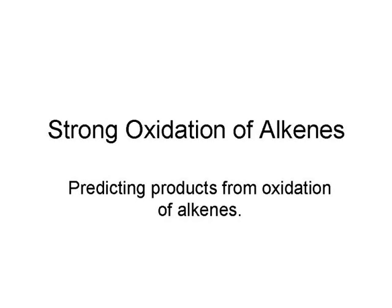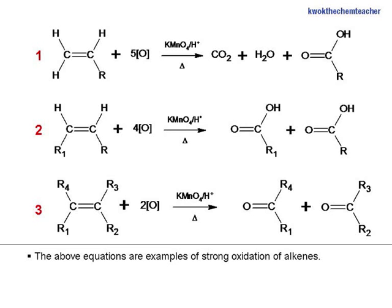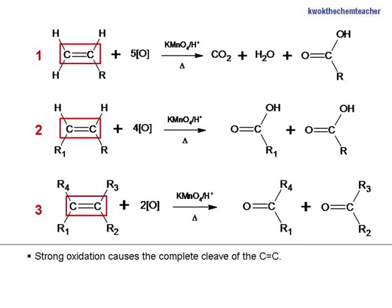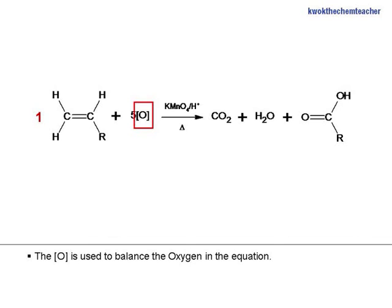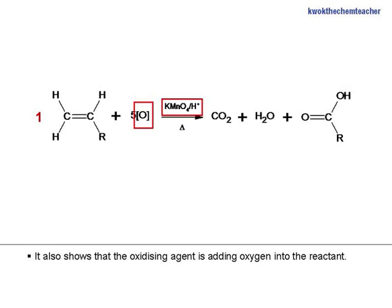This video is on strong oxidation of alkenes — predicting products from oxidation of alkenes. The above equations are examples of strong oxidation of alkenes. Strong oxidation causes the complete cleavage of the carbon-carbon double bond. The bracket O is used to balance the oxygen in the equation, and it also shows that the oxidizing agent is adding oxygen into the reactant.